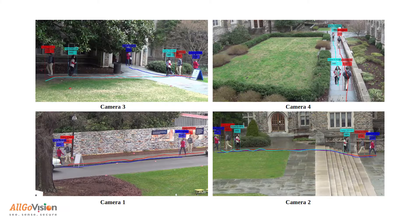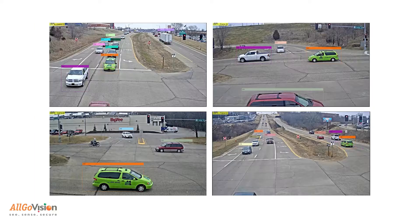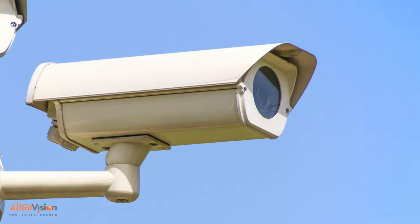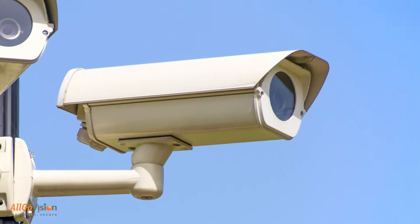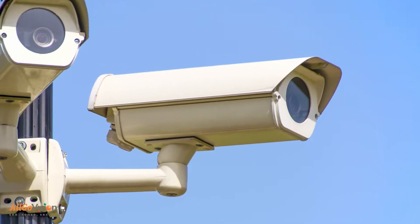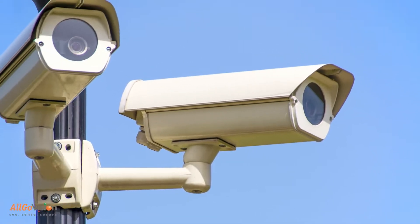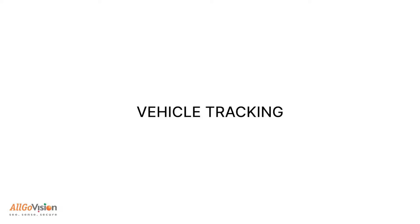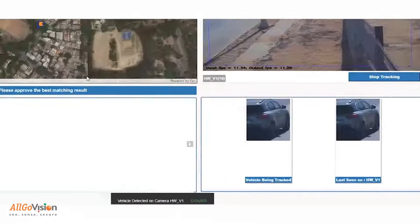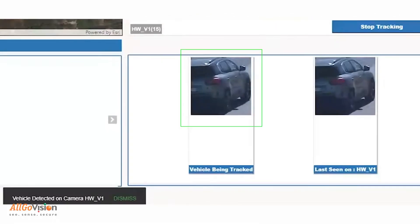AllGo Vision's Multi-Camera Tracking (MCT) is an interactive system that helps to track people or vehicles across multiple cameras, using live video to trace the path traveled for surveillance and monitoring purposes.